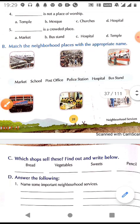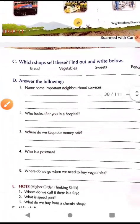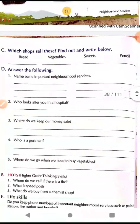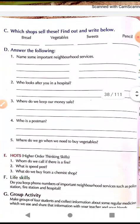Next: which shop sells these? Find out and write below. In a market there are so many shops, and everybody does not sell the same thing — there are different shops for different items. In a clothes shop you will not find grocery items, in a fruit shop you will not find clothes, and in a stationery shop you will not find bakery items.